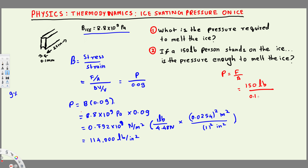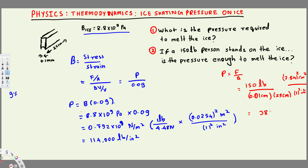We convert 0.1 millimeters to 0.01 centimeters, so the area is 0.01 centimeter times 25 centimeters. Since we need the answer in inch squared, we convert using 1 inch over 2.54 centimeters squared, so the centimeter squared cancels. Calculating this gives us 3,870 pounds per inch squared.